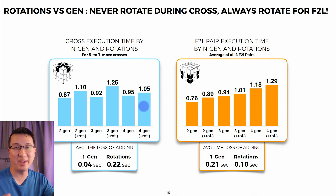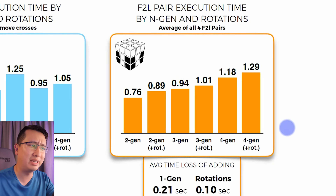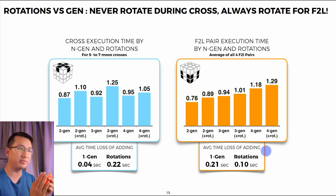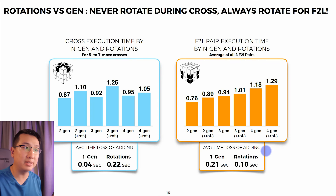I am so guilty of rotating during the cross — I really need to minimize, or just avoid, rotations completely during the cross phase. But F2L paints a completely different story. Doing a two-gen insert versus a three-gen or four-gen insert costs you about 0.2 of a second of increased time. But if instead of adding a wider move you rotate, the increase is only 0.1 of a second. According to the data, if you need to rotate rather than add a B or F move, a rotation during F2L could actually be quicker. Just don't do it during the cross.